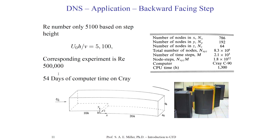Let's look at a particular application. For a backward-facing step at a Reynolds number of about 51,000 — defined as inlet velocity times step height divided by viscosity — the corresponding experiment cannot be performed accurately at such a low Reynolds number, so the actual experiment uses a higher Reynolds number of 500,000. For this DNS case, it takes approximately 54 days on a contemporary Cray supercomputer using shared memory. The computational domain is 10H before the step and 20H after, 4H wide and 6H high — a very simple domain with a very low Reynolds number.